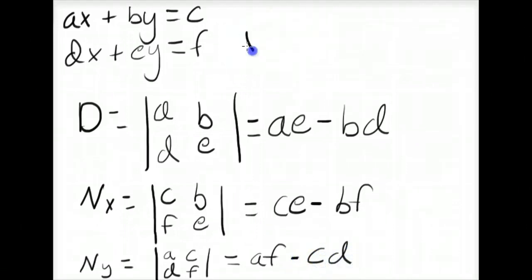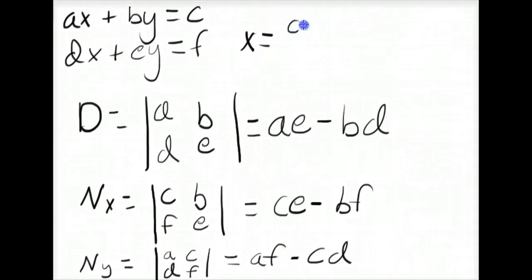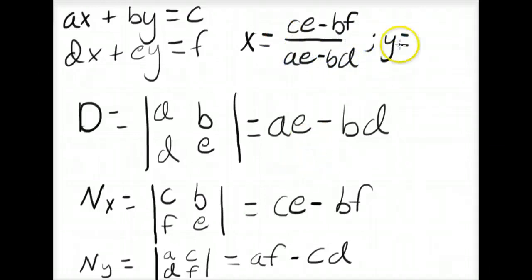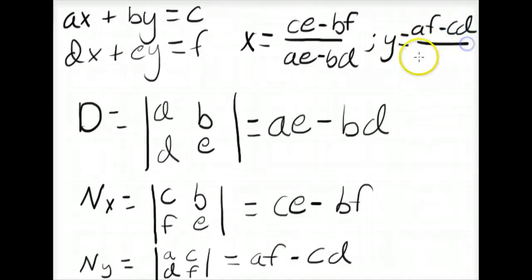Then X equals the numerator of X over the denominator: (CE minus BF) over (AE minus BD). And Y equals (AF minus CD) over (AE minus BD).